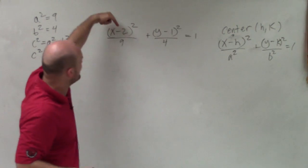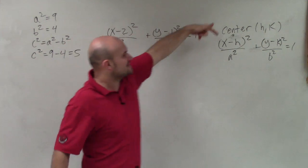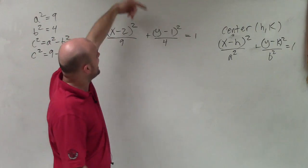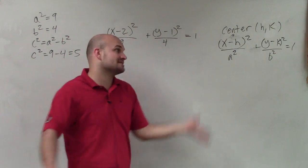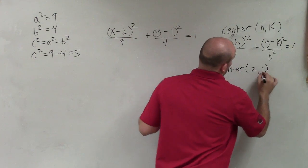So therefore, since you can see we have -2 and -1, remember it's x opposite of h. Opposite of -2 is going to be 2, opposite of -1 is going to be positive 1. So my center is (2,1).